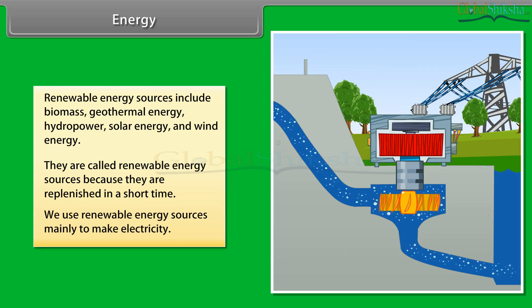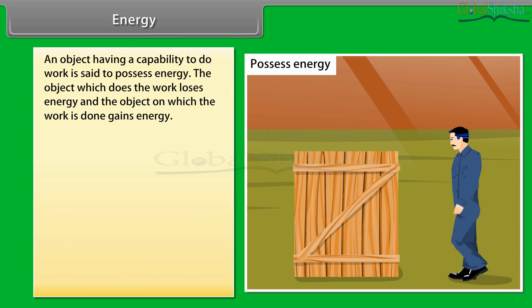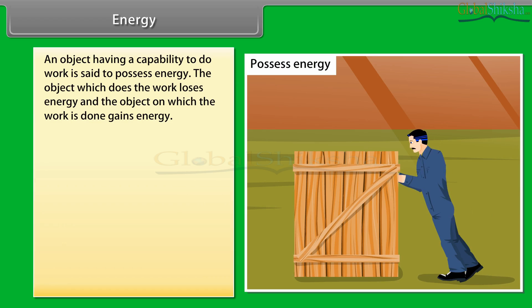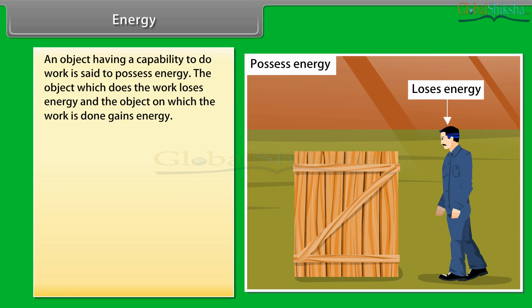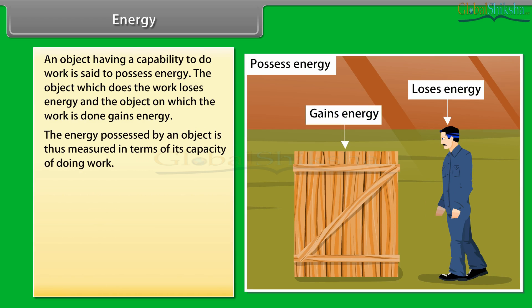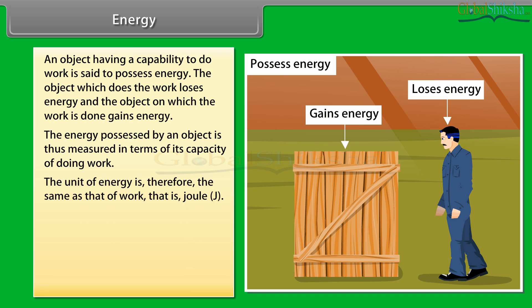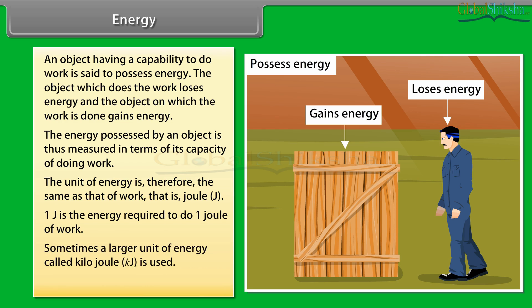We use renewable energy sources mainly to make electricity. An object having a capability to do work is said to possess energy. The object which does the work loses energy and the object on which the work is done gains energy. The energy possessed by an object is measured in terms of its capacity of doing work. The unit of energy is therefore the same as that of work, i.e., joule. One joule is the energy required to do one joule of work. A larger unit called kilojoule is also used; one kilojoule equals one thousand joules.